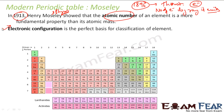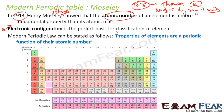Also, electronic configuration is a perfect basis for classification of elements. All the elements in a particular group will have similar electronic configuration. The periodic law can be stated as: properties of elements are a periodic function of their atomic number.